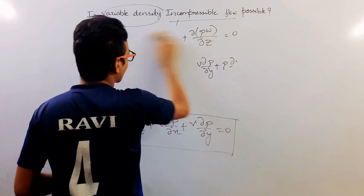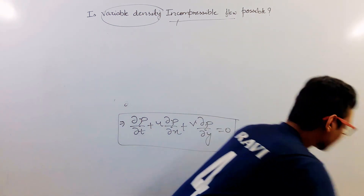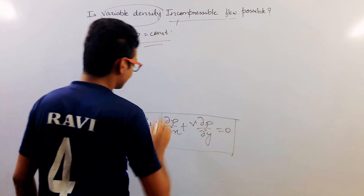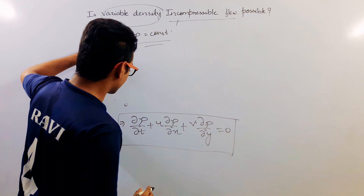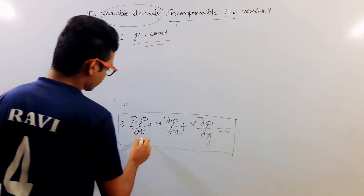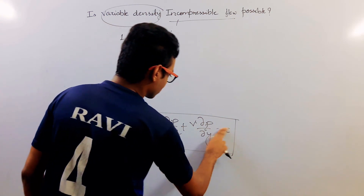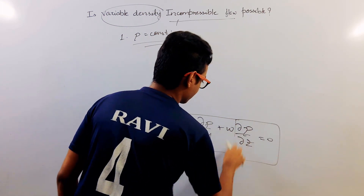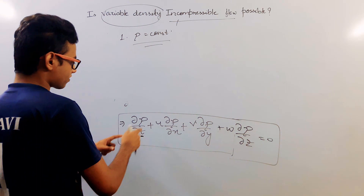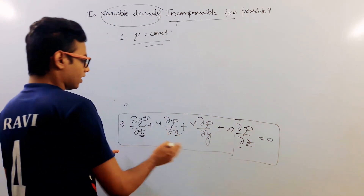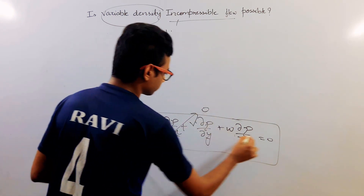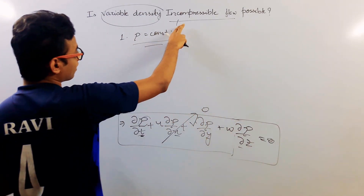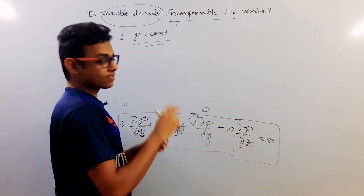I have taken two different cases. In the first case, the density was constant — constant with respect to time as well as with respect to space. So if density is constant with respect to both time and space, then this whole term will be equal to zero, and hence the general continuity equation is satisfied. So when the density is constant, incompressible flow is possible — that is just a special case.